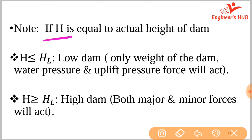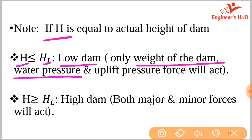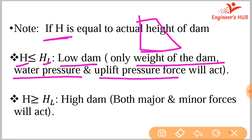Based on the limiting height H_L: if the given height of the dam is less than H_L, it is classified as a low dam. For a low dam, only three forces act — the weight of the dam, water pressure, and uplift pressure force. There are two water pressure forces (one on the upstream side and one on the downstream side), one self-weight, and one uplift pressure.